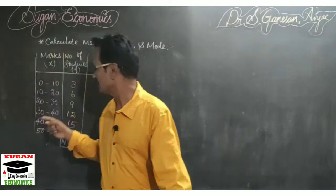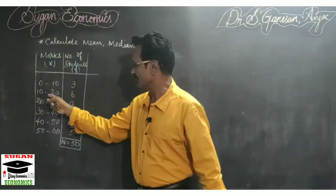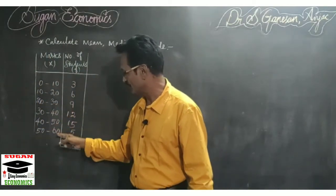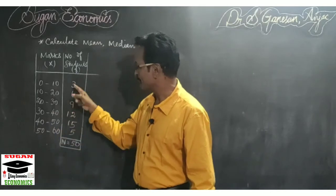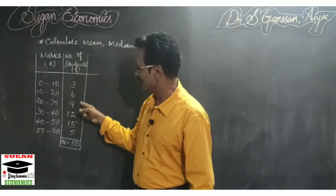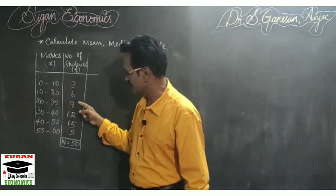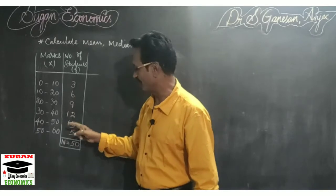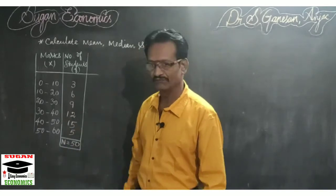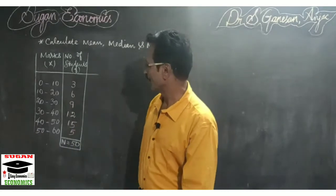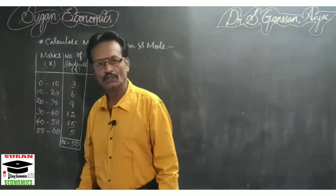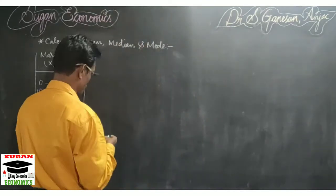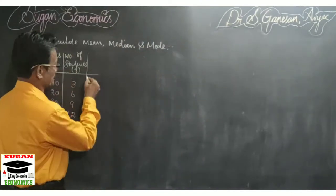The marks are 0 to 10, 10 to 20, 20 to 30, 30 to 40, 40 to 50, and 50 to 60. The frequencies, that is number of students, are 3, 6, 9, 12, 15 and 5. So n is equal to 50. Now we have to calculate mean, median and mode for this particular series.